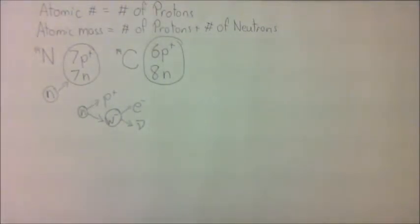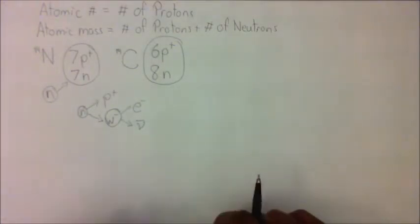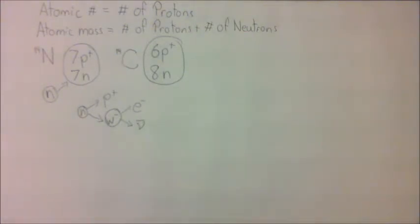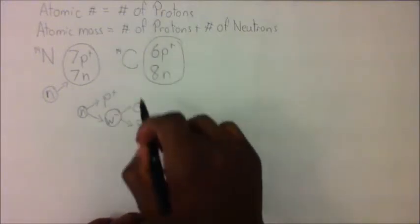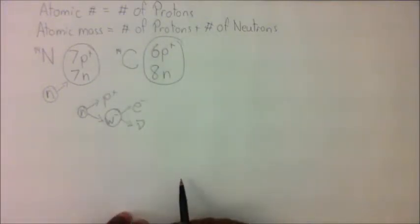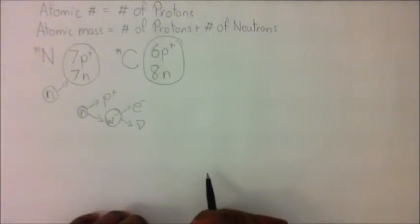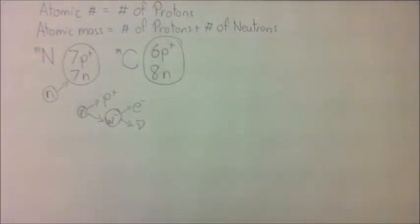Now the chance of a carbon-14 atom doing this is roughly about 50% for every 5,730 years, which means that if you have a sample of carbon-14 atoms, after 5,730 years, roughly half of them will be gone, and this is what we refer to as the half-life.